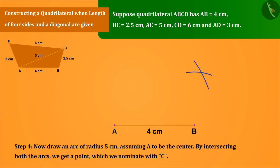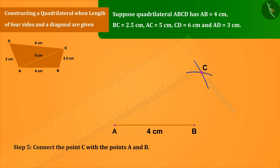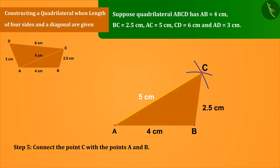By intersecting both the arcs, we get a point which we nominate with C. Connect the point C with the points A and B, which gives us the triangle ABC.